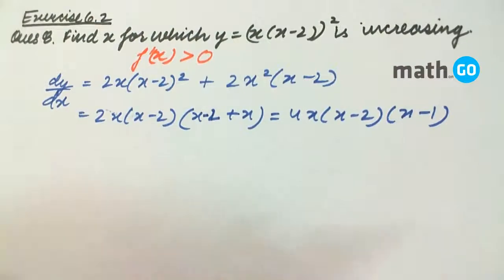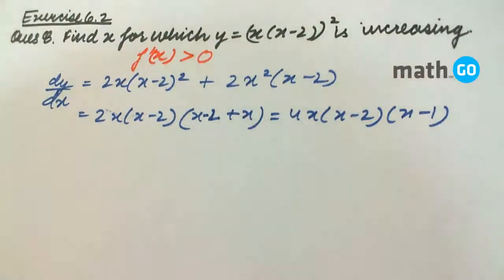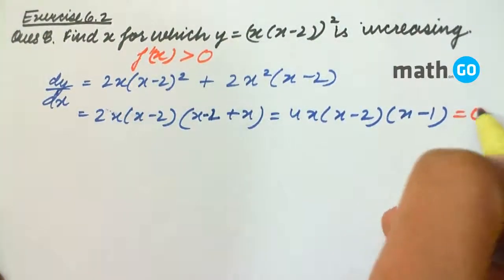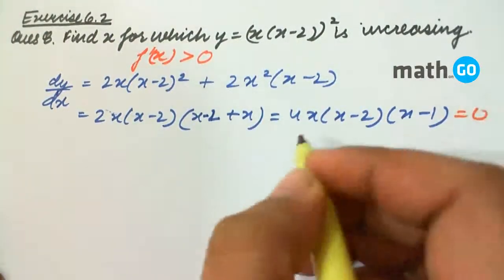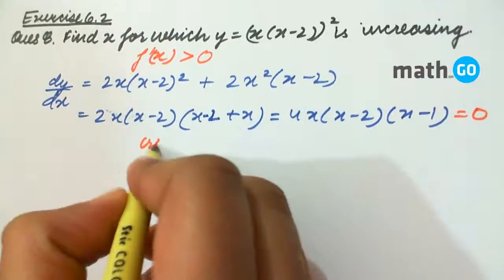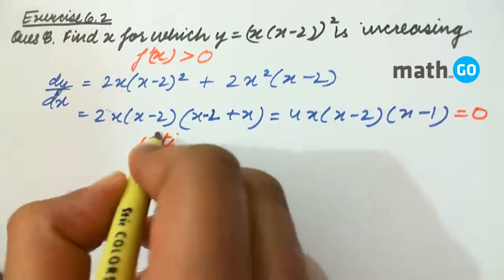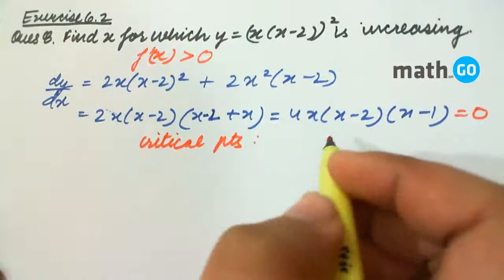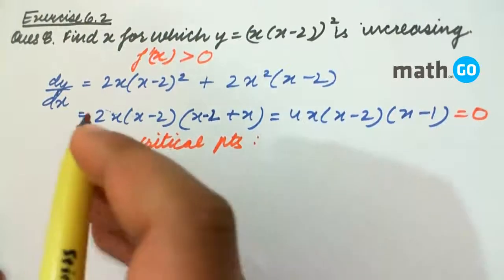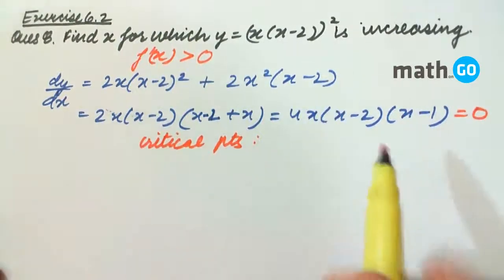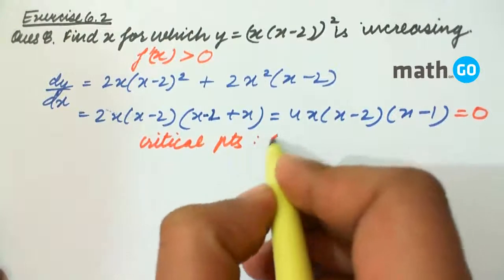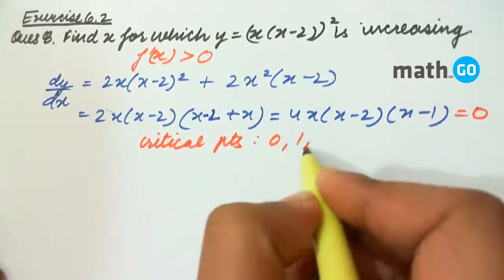Now this is a complex expression. We will find the critical points by setting it equal to 0. Critical points are the points which define the intervals at which the nature of the function changes. For this function, the critical points are 0, 1, and 2.